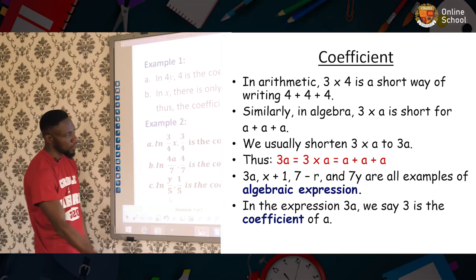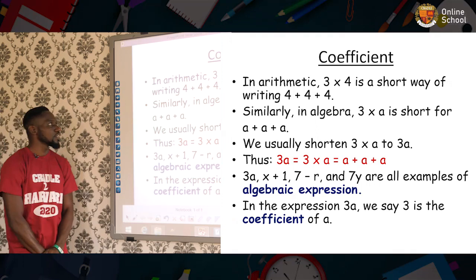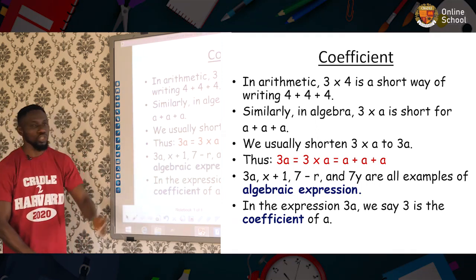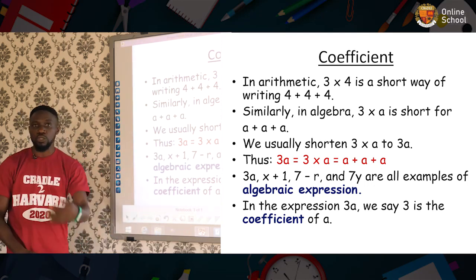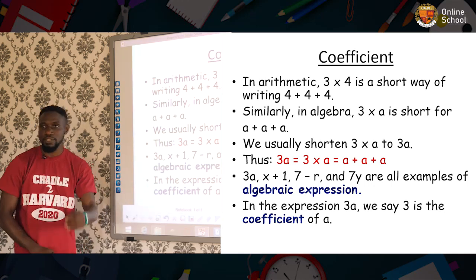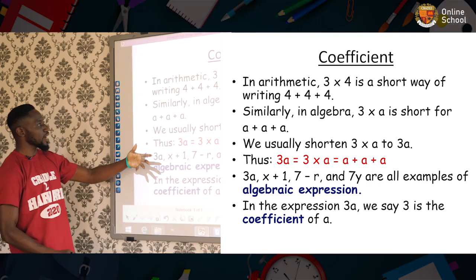The first one is the coefficient. Now, you see, in arithmetic, 3 × 4 is a short way of writing 4 + 4 + 4. That is to say, writing four in three places. But in algebra, it's also the same thing. When you say 3 × a, it means a + a + a.